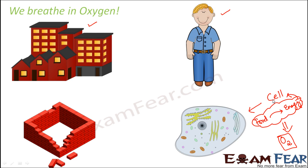Only when cells are able to generate energy will they be able to do their work. And only when all the cells of our body are doing their work will our body do its work. So even if one cell stops working, our body will be in a mess. This process of generating energy from the food we eat is known as respiration. As part of this process, oxygen is breathed in — that is why we breathe in oxygen. That oxygen reaches each and every cell of the body, and each cell utilizes that oxygen to convert food into energy. That's how the cells keep on working.